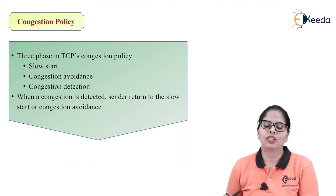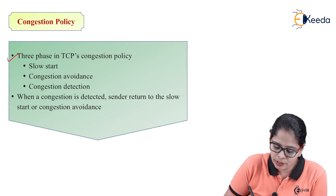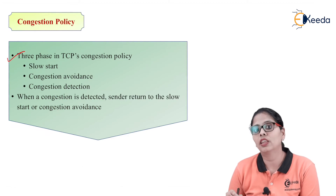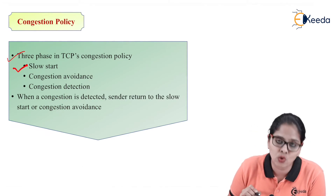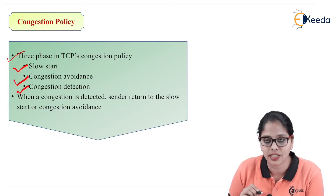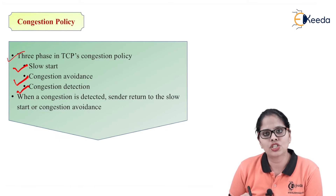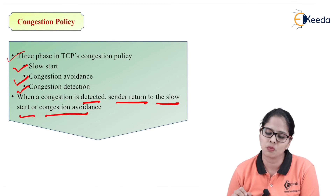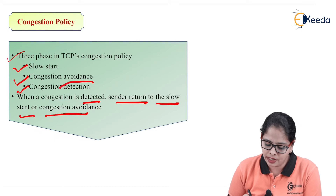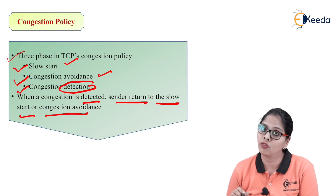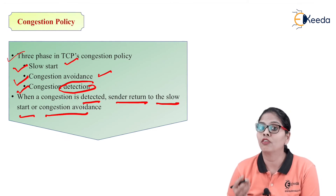TCP congestion policy has three phases. It starts with slow start, then moves to congestion avoidance, and the third step is congestion detection. When congestion is detected, the sender will return to either the slow start or congestion avoidance method, depending on the situation.